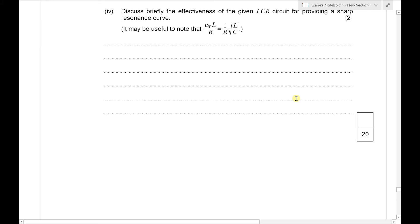For the final part of the question we've got to discuss briefly the effectiveness of the given LCR circuit in providing a sharp resonance curve, and they tell us that it may be useful to note that ω₀L over R is 1 over R root L over C and these are both formulas for the Q factor. So let's use the second version of it. So it's 1 over 82 root of 5.2 times 10⁻³ for L and 220 times 10⁻⁹ for C, and that gives us 1.9 which is quite a low Q factor. You're looking at at least sort of double figures for a reasonable Q factor and therefore the curve won't be sharp.